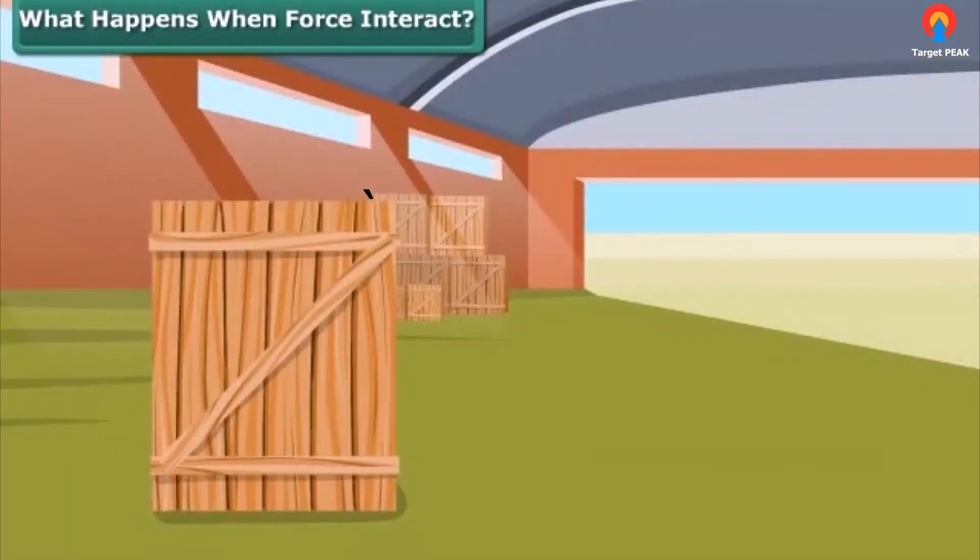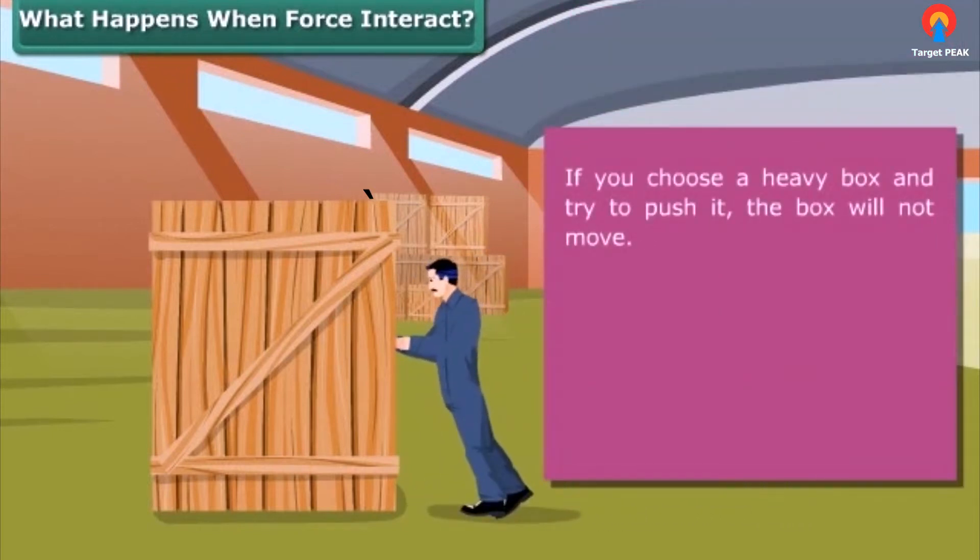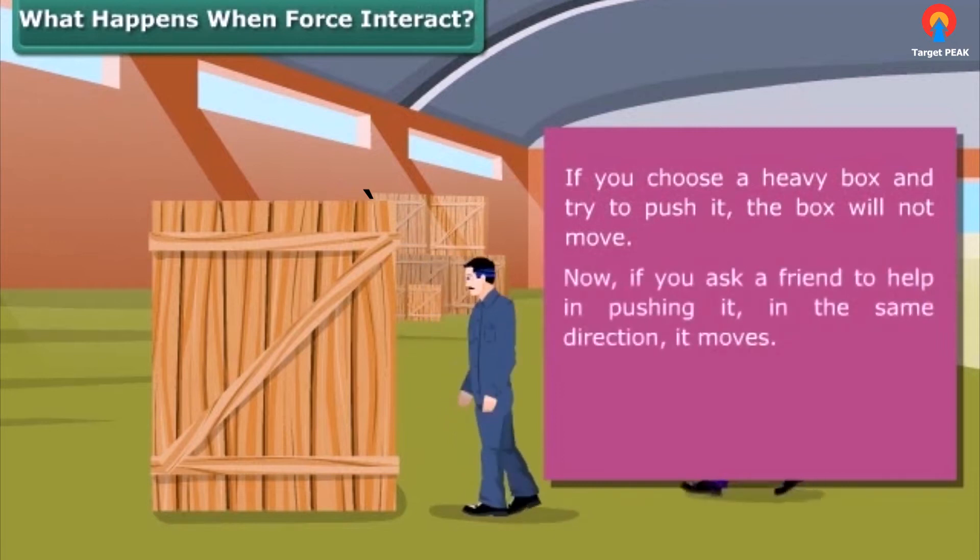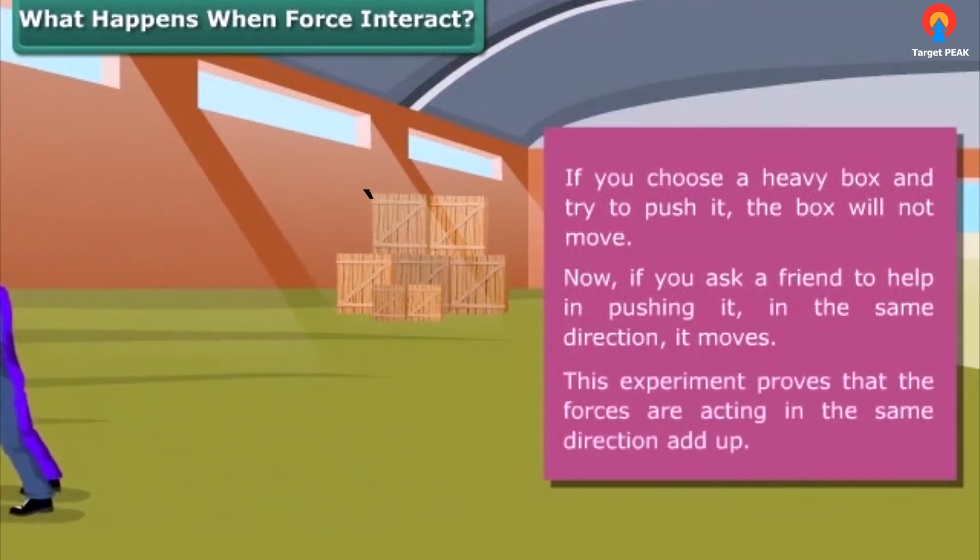What happens when forces interact? If you choose a heavy box and try to push it, the box will not move. Now if you ask a friend to help in pushing it in the same direction, it moves. This experiment proves that the forces acting in the same direction add up.